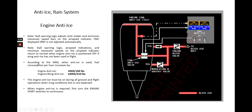Something interesting to know is that according to the MRG, when anti-ice is used, fuel consumption per hour increases. With engine anti-ice only, fuel consumption per hour increases by 45 kilograms or 100 pounds. If using both engine and wind anti-ice, it increases by 140 kilograms or 310 pounds. Keep that in mind when flying in icing conditions.